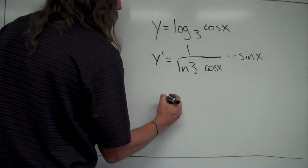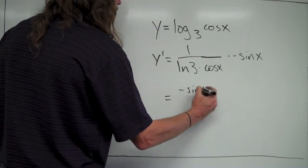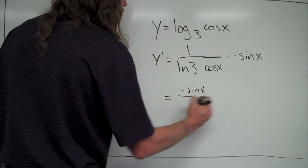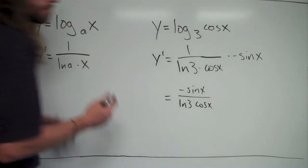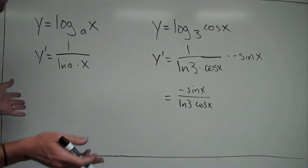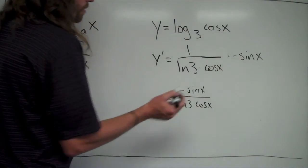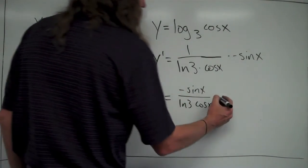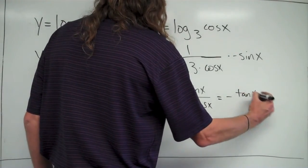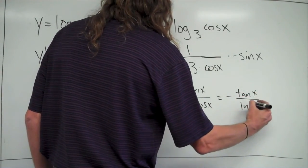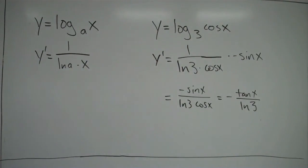So I end up getting negative sine x on top over natural log of 3 times cosine x. I notice that sine over cosine equals tangent, so I could simplify this as negative tangent x over natural log of 3. Either form would be acceptable.